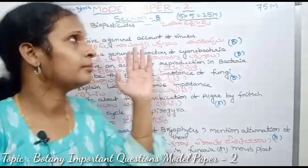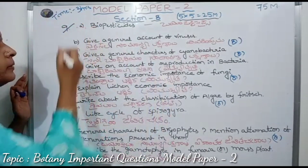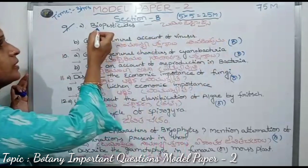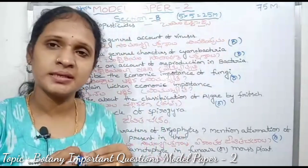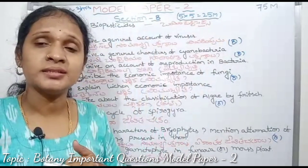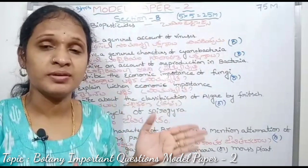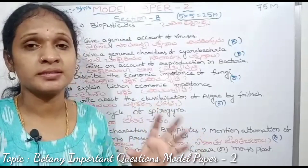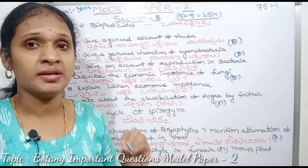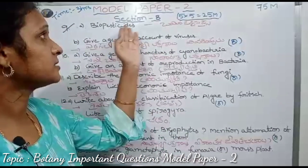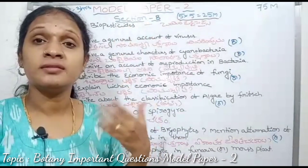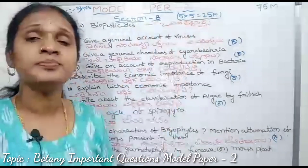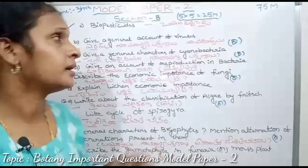Next, we have a 10-mark question. In part A and B, you have a choice. Option A is biopesticides — what are biopesticides? The virus acts as biopesticides, cloning vector, and biofertilizers. You can write about a virus acting as biopesticides, for example, coronavirus.